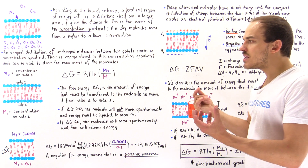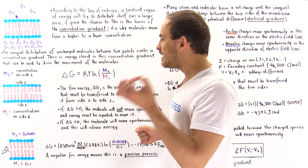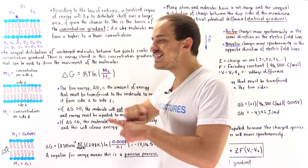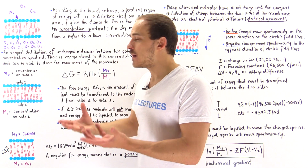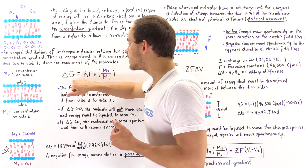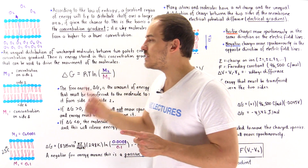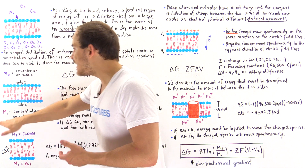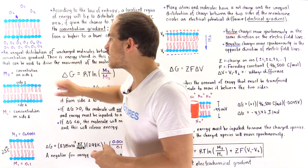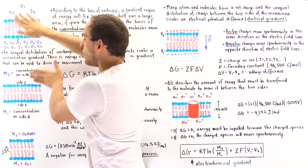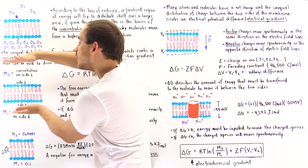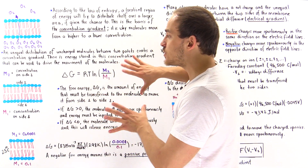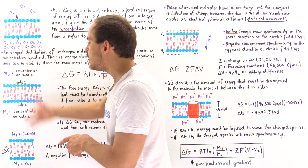Let's discuss the meaning of ΔG. If ΔG is zero, since R cannot be zero and absolute temperature cannot be zero, this occurs only when the ratio m2/m1 equals one — meaning the concentration on side one equals the concentration on side two. If the two concentrations are equal, the two energy sides are equal and the difference in energy is zero. In this case, we have reached equilibrium and the molecules will not be moving from either side.